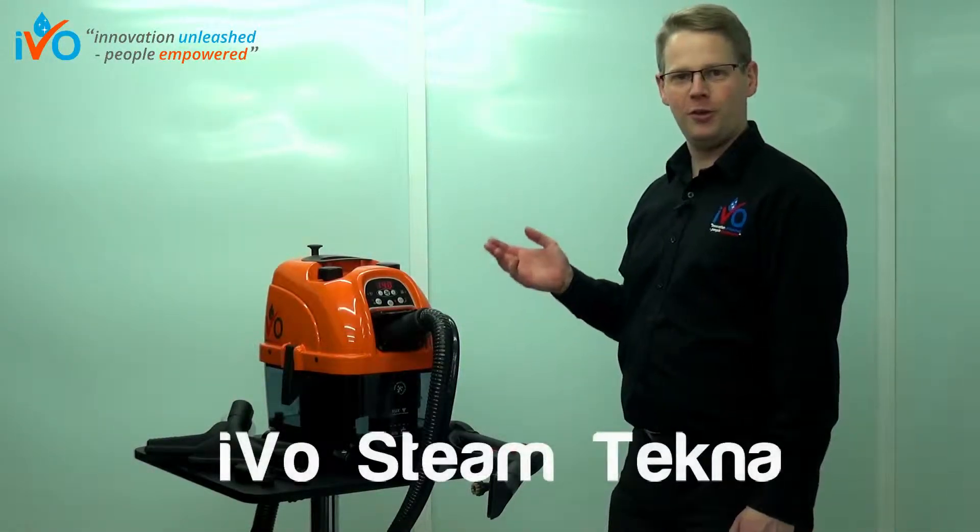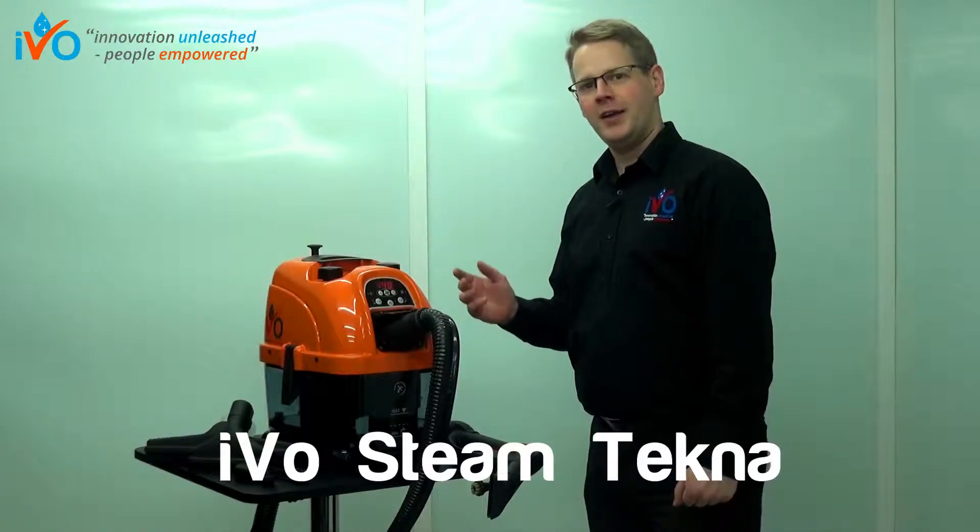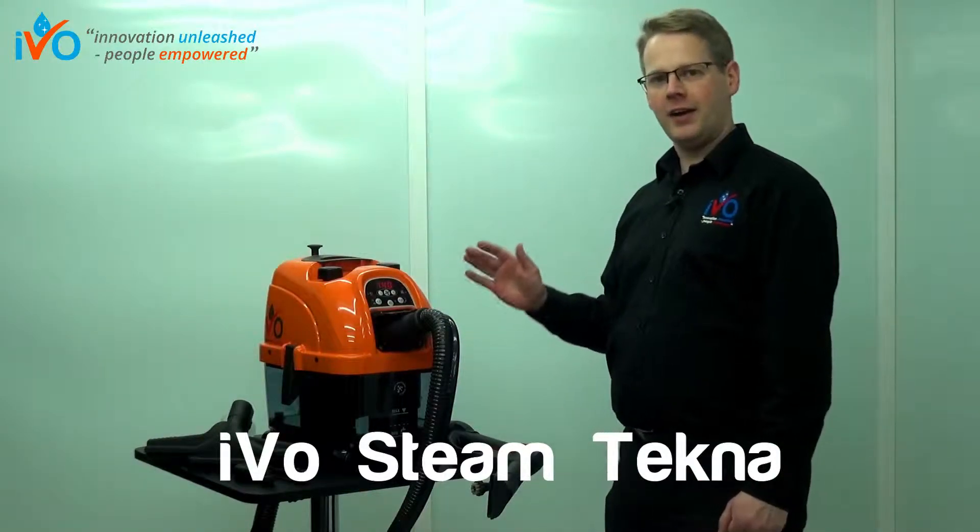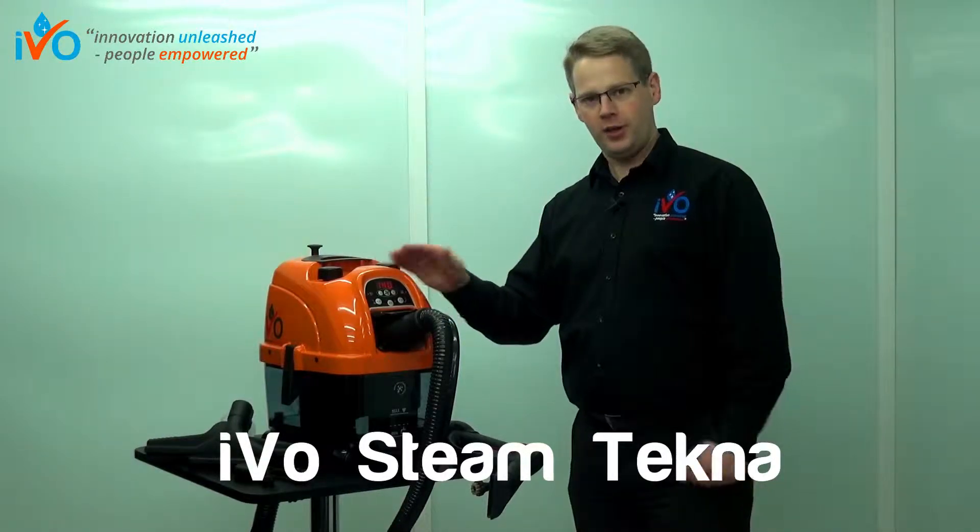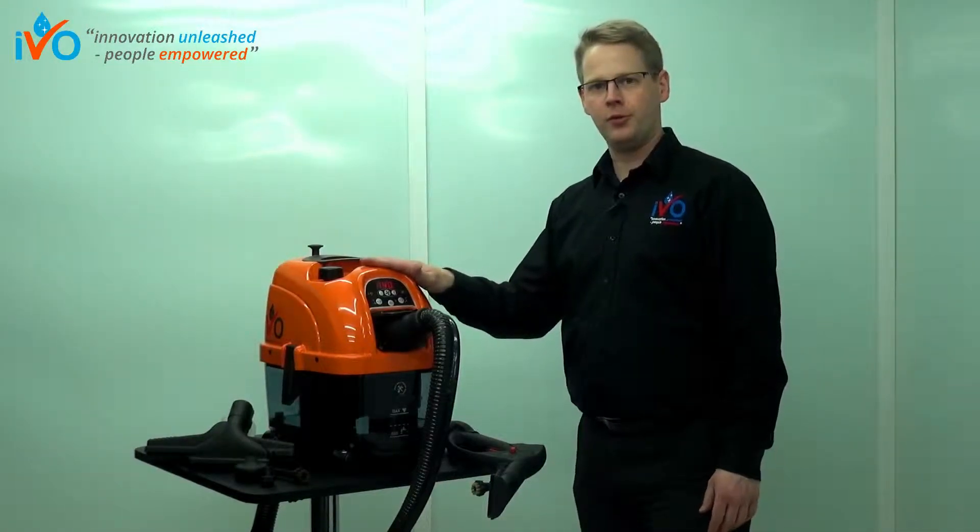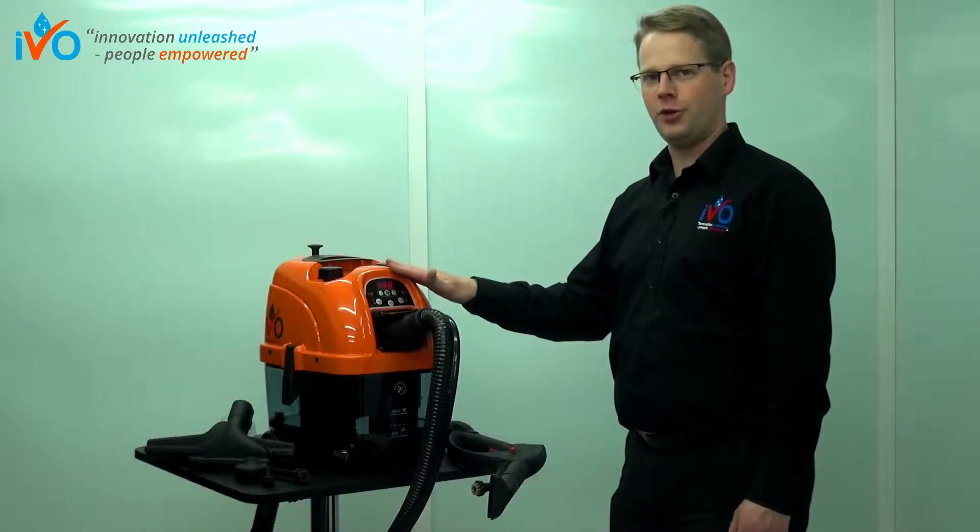One of the most brilliant features of the iVo steam machines is the detergent facility. Now this is not available in any other steam machine of this size. Yes, in some of the really big industrial versions, but not in the compact ones. This is unique to the iVo steam machines.